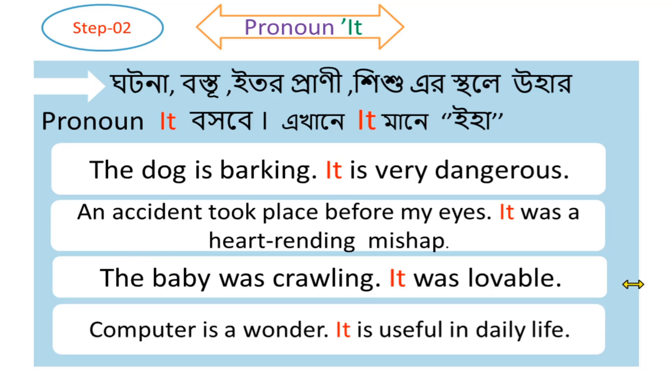Another example of 'it' as a pronoun: 'Computer is a wonderful device; it is useful in daily life.' Here 'it' refers to the computer mentioned earlier in the sentence, functioning as a pronoun.